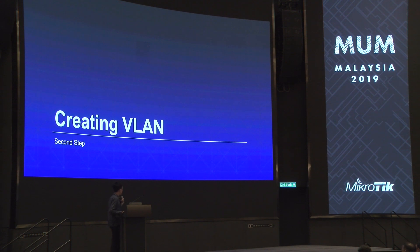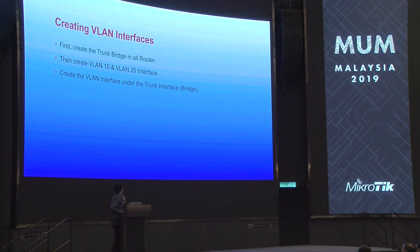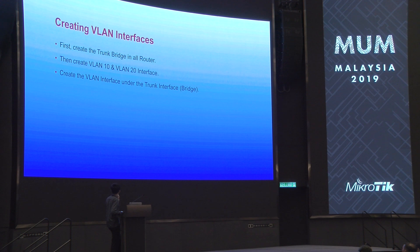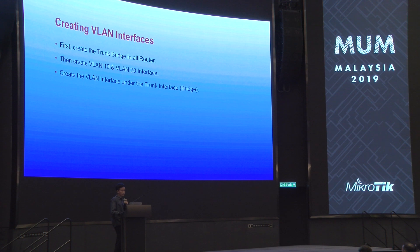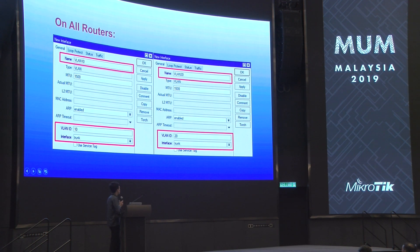The next step is creating the VLAN. First, create the trunk bridge on all routers, because all routers will be trunking into the gateway router through the EoIP tunnel. Then we need VLAN 10 and VLAN 20 interfaces. After creating the interfaces, create the VLAN interfaces under the trunk interface or the bridge interface — create VLAN 10 and VLAN 20 under the trunk interface.